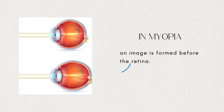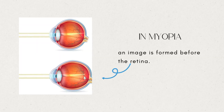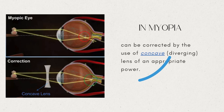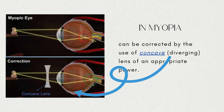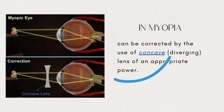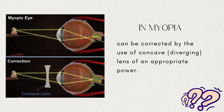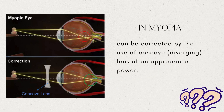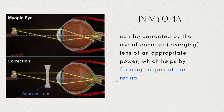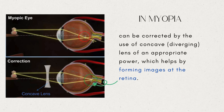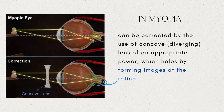In myopia, an image is formed before the retina. The defect can be corrected by the use of a concave or diverging lens of appropriate power. A diverging lens helps in forming images at the retina.